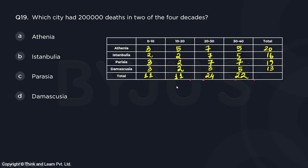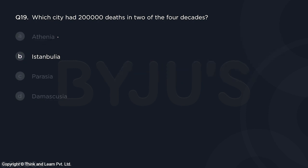Question 19: Which city had 2 lakh deaths in two of the four decades? Athenia doesn't have two 2-lakh decades; Parisia doesn't either; Damascus doesn't. Istanbulia has 2 lakh deaths in two of the four decades. So the answer is option B — Istanbulia.